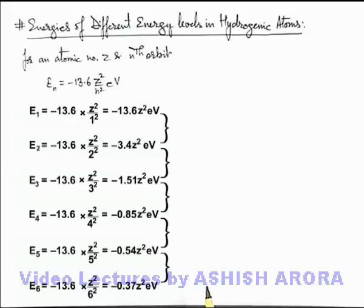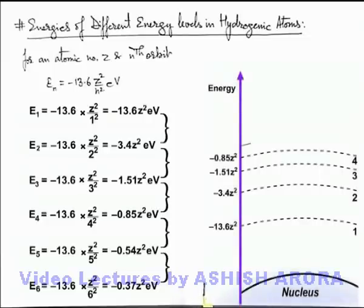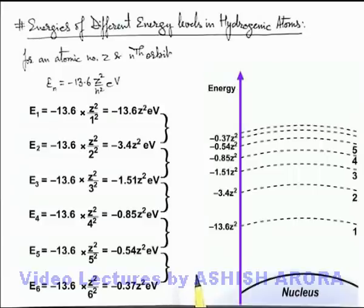Similarly, if we draw the fourth orbit pictorially, we have to draw it much closer to the third orbit. It'll be having energy minus 0.85 Z squared eV, having a difference of 0.66 electron volts with the third orbit. Similarly other orbits can be drawn. As we are moving away from the nucleus, the orbits are getting closer and closer. The adjoining orbit energy difference between very high values of orbital quantum number will be approximately tending to zero.